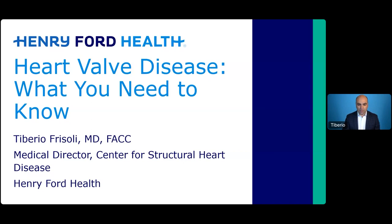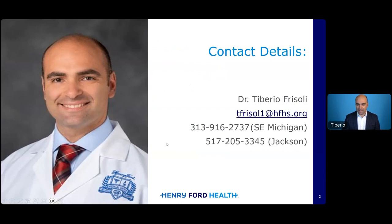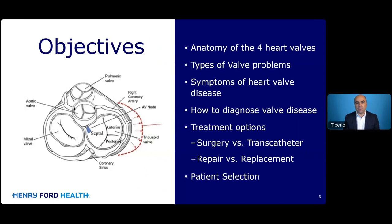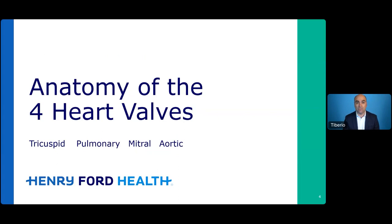The objectives for today are to talk about the anatomy of the four heart valves, the types of valve problems that patients can face, the symptoms of heart valve disease, how we diagnose heart valve disease, and how we treat it — thinking about treatments in terms of surgical versus transcatheter or minimally invasive, and repairing a valve versus replacing a valve. We'll also talk about patient selection: how do we choose one therapy versus another for any given patient?